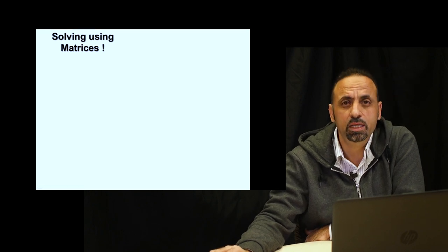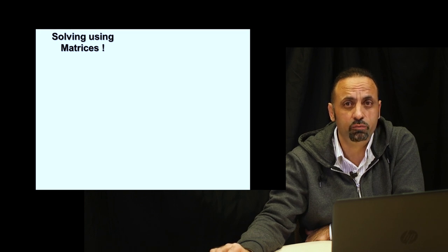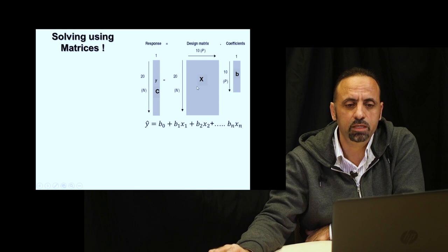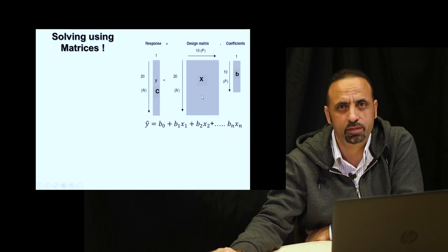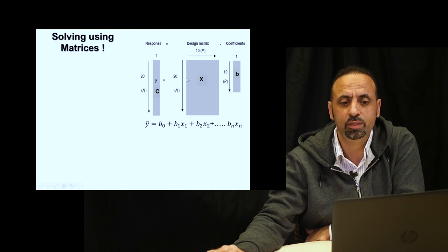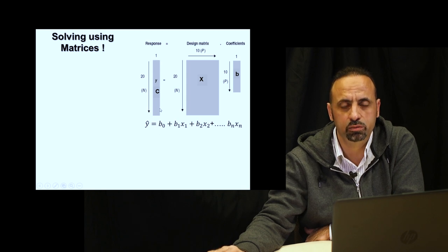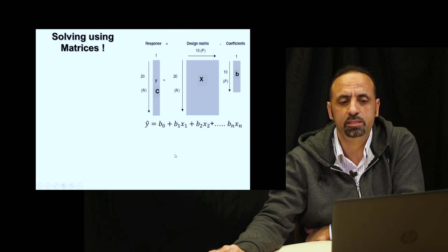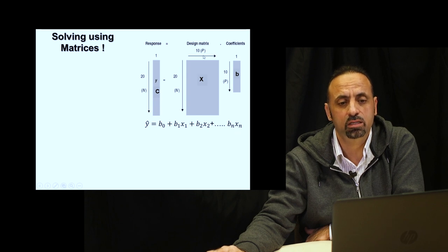Fortunately, we can use matrices to solve these equations. For example, if we have spectral data with more than two variables — say 10 variables — and 20 samples, all of these variables are used for predicting a concentration or constituent. I need to obtain the equation, but in this situation I don't have only two variables; I have n variables — in this example, 10.